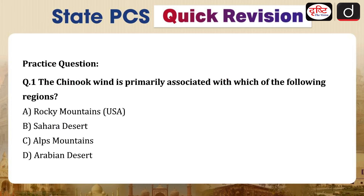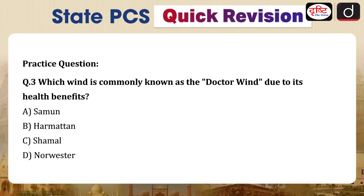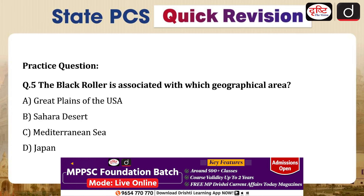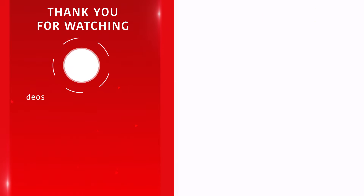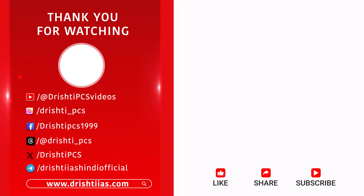Now for practice questions: Question 1 — Chinook wind is primarily associated with which region: Rocky Mountains USA, Sahara Desert, Alps Mountains, or Arabian Desert? Question 2 — Which wind is known for causing blood rain in southern Italy: Sirocco, Fohn, Chinook, or Harmattan? Question 3 — Which wind is commonly known as the doctor wind: Samoon, Harmattan, Shamal, or Norwester? Question 4 — Yoma wind blows through which country: China, Japan, Iraq, or Sudan? Question 5 — Black Roller is associated with which area: Great Plains of USA, Sahara Desert, Mediterranean Sea, or Japan? Attempt all questions and answer in the comment box.